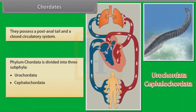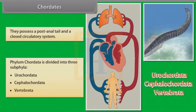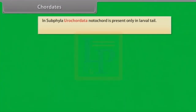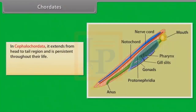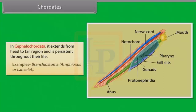The three subphyla are Urochordata, Cephalochordata and Vertebrata. In subphyla Urochordata, notochord is present only in the larval tail. Example: Ascidia, Salpa, Doliolum. In Cephalochordata, it extends from head to tail region and is persistent throughout their life. Example: Branchiostoma, Amphioxus and Lancelet.